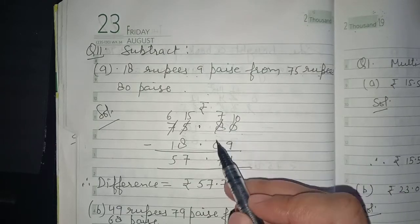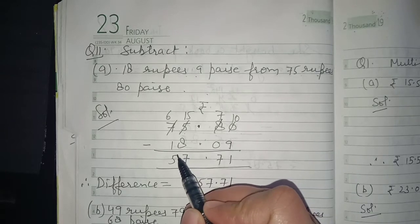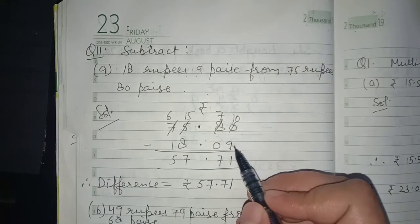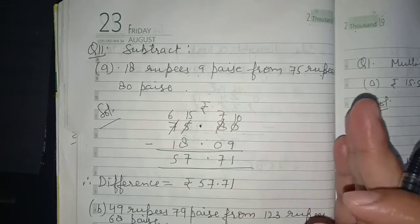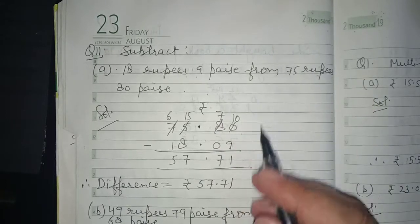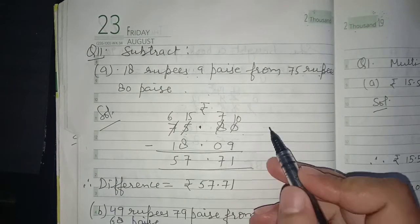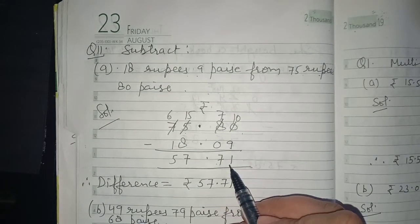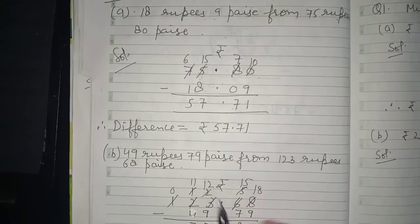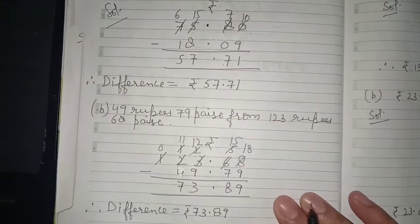Then write the first amount: 18 Rupees and 9 Paisa — write 18 under the rupees side and 9 Paisa under the paisa side. Remember, paisa must be written in two digits, so 9 Paisa is written as 09. Now subtract — after subtraction you get 57.71. Therefore, difference is Rupees 57.71.